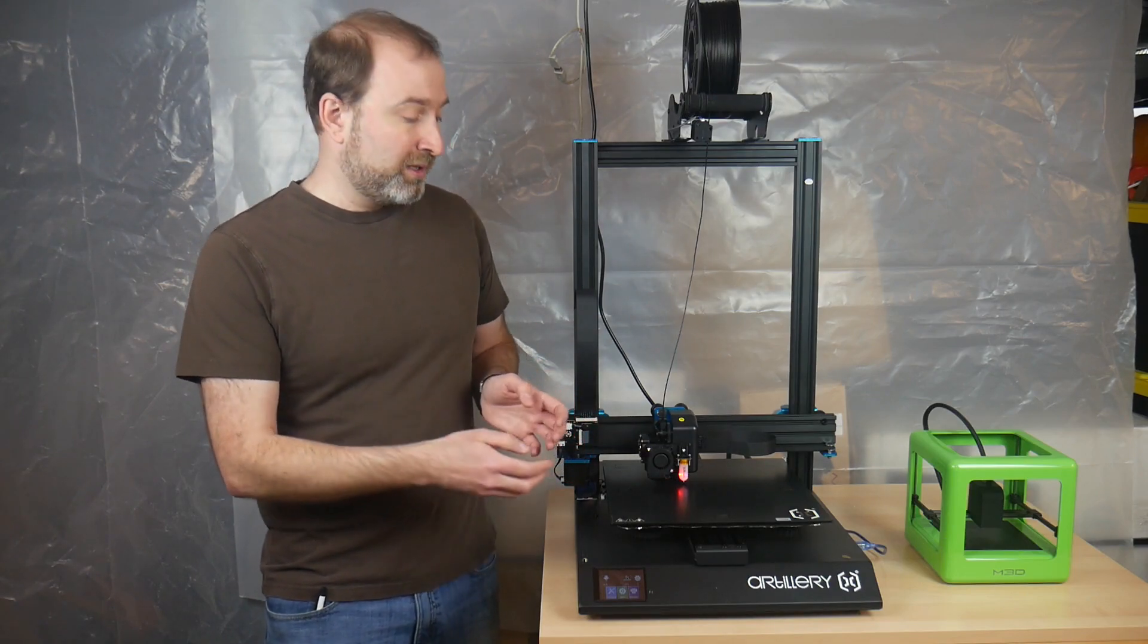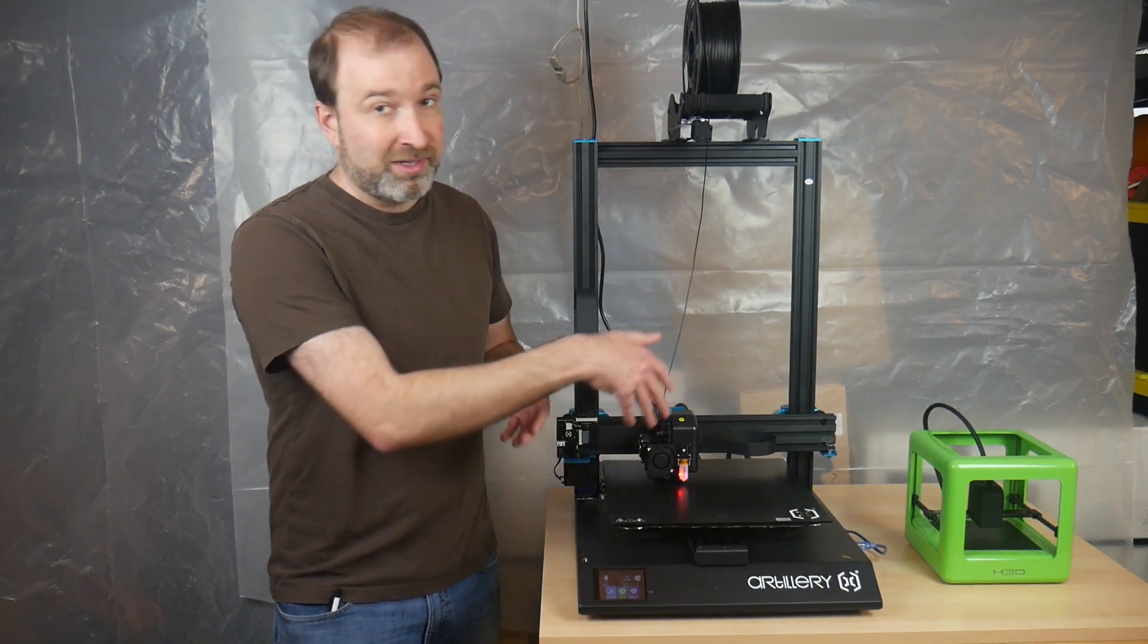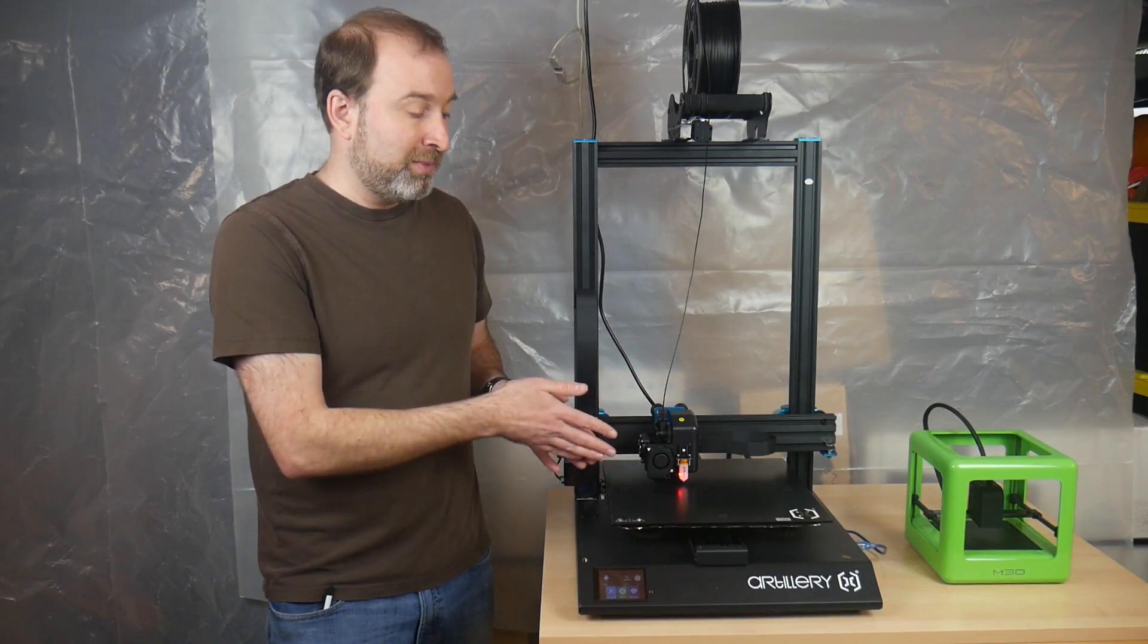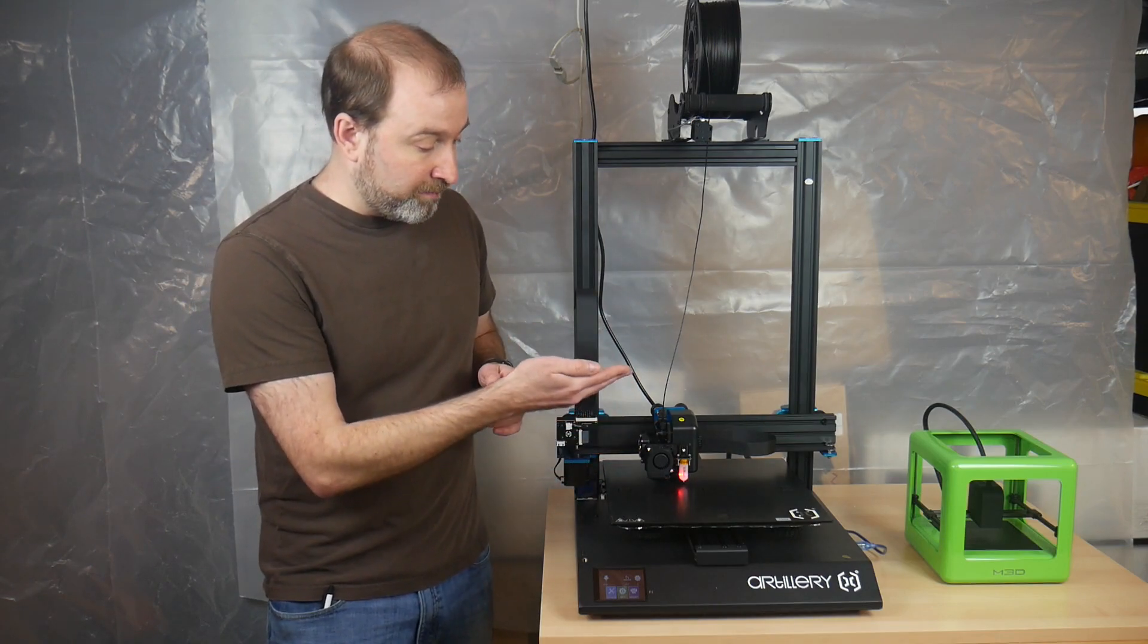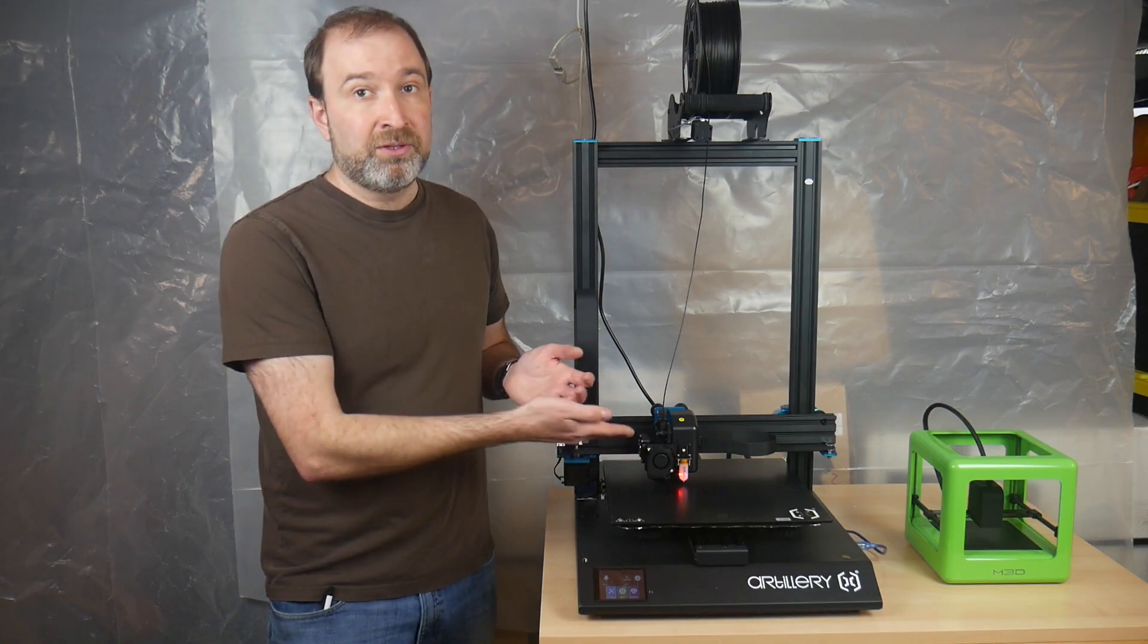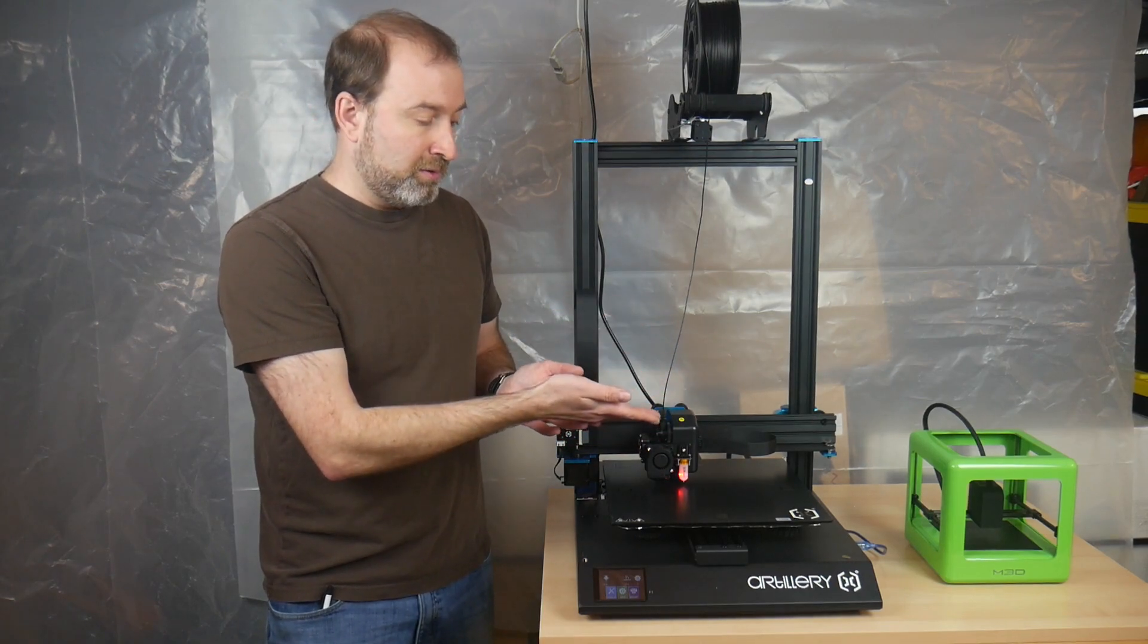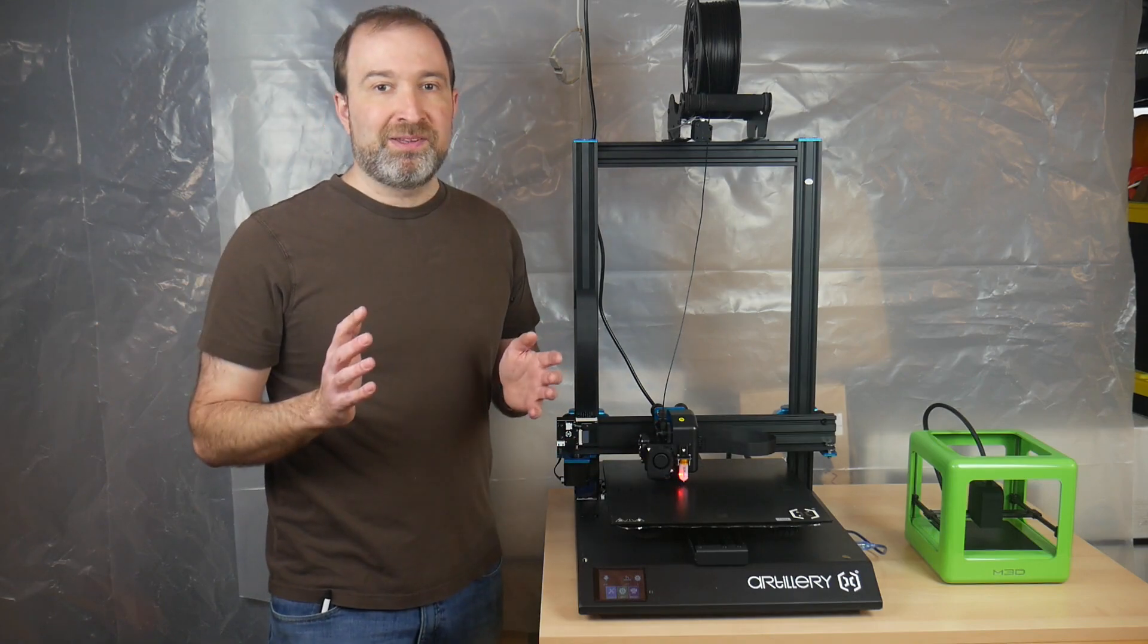Try to keep it stock, get comfortable with it, understand it, get it printing well, and then if you want to improve something like I put this BL Touch on—this is the only non-stock thing besides updating the firmware that I did. I did that because the bed was actually bowed and I'm waiting for Artillery to send me a new bed that's been RMA'd. It's going to take a couple weeks, but in order to really get it printing well I had to put the BL Touch. There was no way around it because I could level it on all four sides, but the center wouldn't be able to extrude and have it touch the bed. So try to keep it stock.